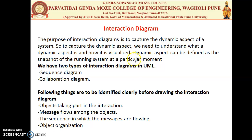The purpose of the interaction diagram is to capture the dynamic aspect of the system. The dynamic aspect can be defined as a snapshot of a running system at a particular moment. The two diagrams suited for this are the sequence diagram and the collaboration diagram. Before drawing an interaction diagram, we need to identify the objects taking part in the interaction, the message flow among objects, and the object organization.